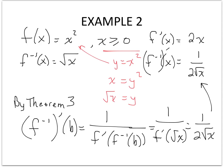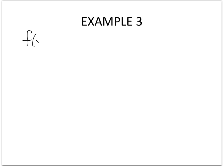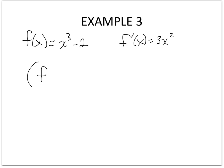This is nice because I don't have to go through all those steps. In MathLab they'll want you to find inverses explicitly, but using Theorem 3 I can find the derivative of the inverse directly. For example, if f(x) equals x cubed minus 2, the derivative is 3x squared, and by Theorem 3 the derivative of the inverse is simply 1 over 3x squared.